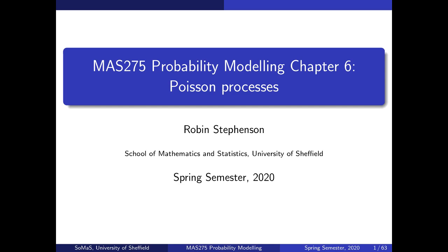Hello, welcome back to Probability Modeling. Today we're going to start doing Chapter 6, focusing on Poisson processes. The slides look a bit different — I've done a little cleaning up so there's less space taken by the outline at the top, so things will be easier to see. So let's dive into Poisson processes. These are the last kind of object we'll introduce and I hope you'll see that they're really an interesting and beautiful mathematical object.